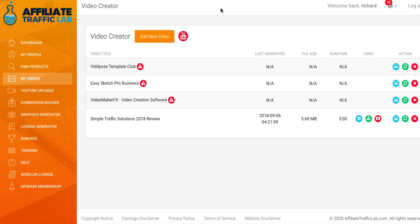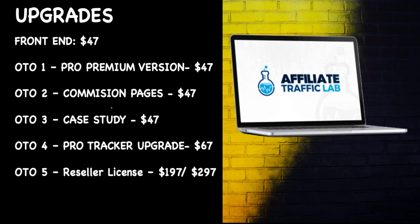If you come across this in any Glyn Kosky products as some kind of selling point, completely ignore it. Now, just as part of my usual reviews, let me tell you about the pricing. The front end is $47. OTO 1 is a pro premium version at $47. OTO 2 is a commission page version at $47. OTO 3 is a case study at $47. OTO 4 - which I embarrassingly bought - is a pro tracker upgrade at $67. And OTO 5 is a reseller license at $197, up to $297 for the upgraded reseller license. These are all still live - people could actually go ahead and buy these, and it would be such a shame.